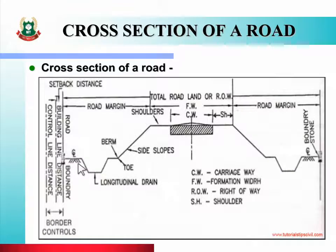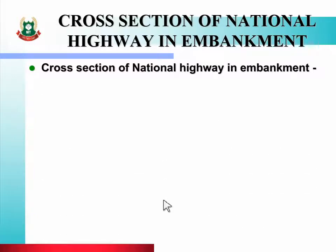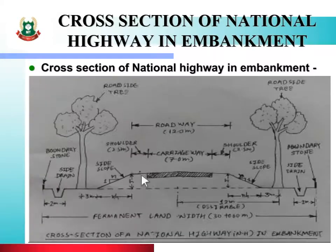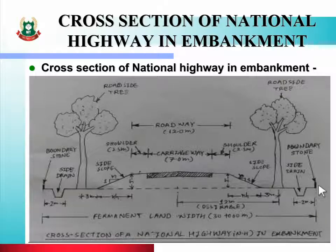Referring to this figure, we need to draw the cross section of national highway in embankment. See the figure of the cross section of national highway in embankment. In this figure you can see road components such as carriage way, shoulder, road way, side slope, side drain, and boundary stone. In this way, the cross section of a national highway can be drawn.